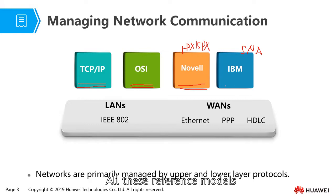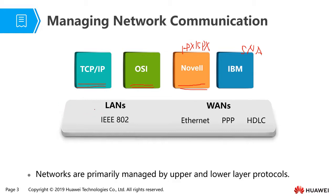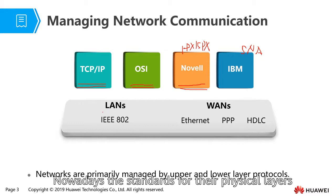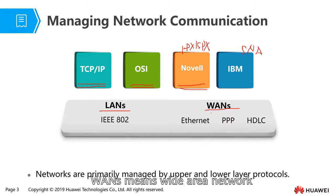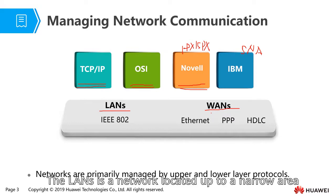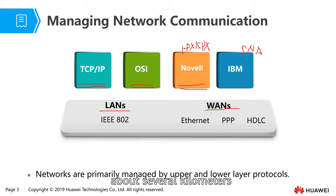All these reference models are usually defined as upper-layer protocols, and the physical layer — the bottom layer — is usually the same. For the physical layers, there are two types: LANs and WANs. LAN means local area network, and WAN means wide area network. The LAN is a network located in a narrow area, such as a campus. The wide area network can extend to a long distance, from some kilometers to thousands of kilometers.